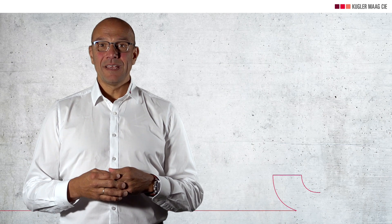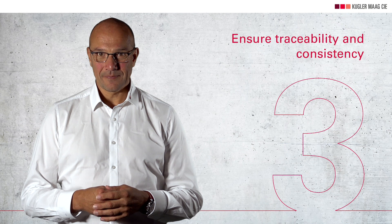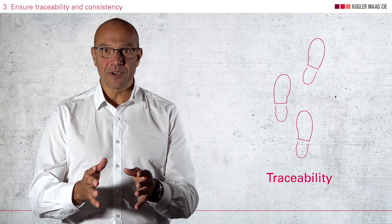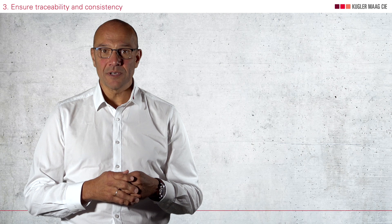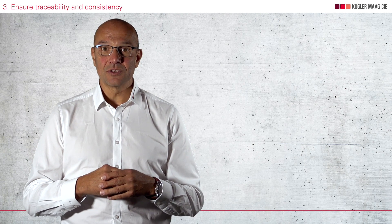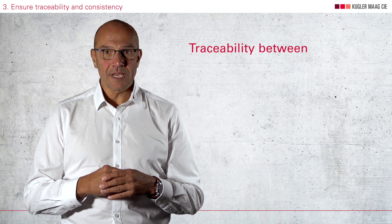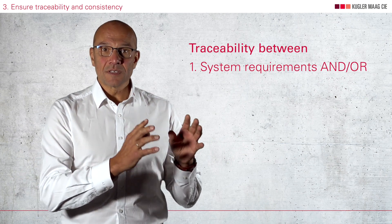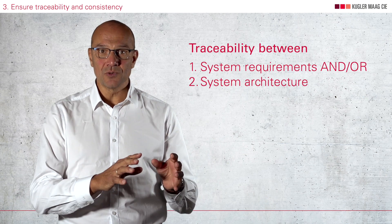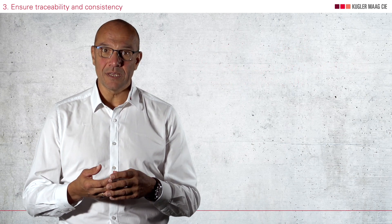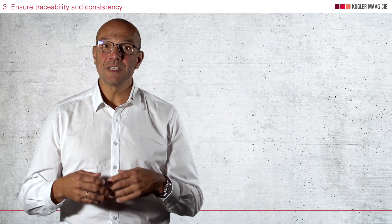Number three: ensure traceability and consistency. This process also requires that you ensure traceability between your software requirements, the system requirements, and the system architecture. However, Automotive SPICE explicitly states that redundancy is not required. You can decide whether you prefer traceability to the system requirements, to the system architecture, or a combination of the two. It depends on which approach supports your development in the best way, not on which approach is easier for you.